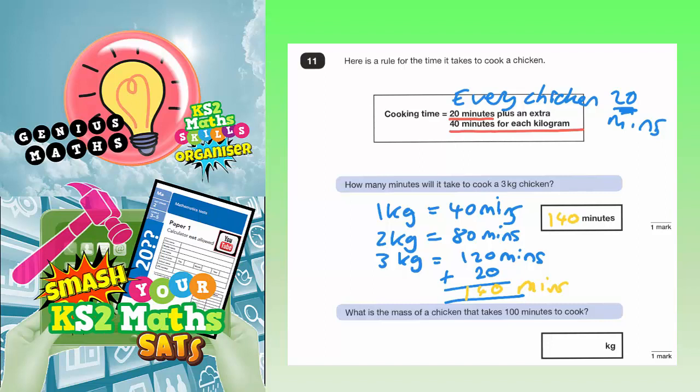The second part of the question is what is the mass of a chicken that takes 100 minutes to cook? Well you might as well just work in reverse. So this time you can knock off the 20 minutes.